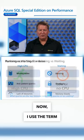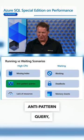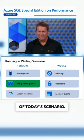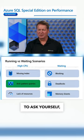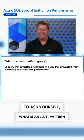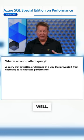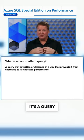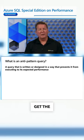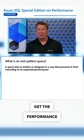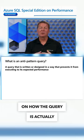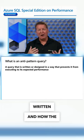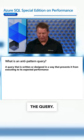I use the term anti-pattern query, and that's going to be the focus of today's scenario. You're trying to ask yourself, what is an anti-pattern query, Bob? Well, this is my definition: it's a query that's designed in such a way that you don't get the performance you expect, and it's based on how the query is actually written and how the different results come back from the query.